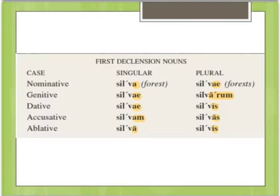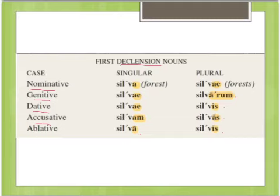Latin nouns are grouped in things called declensions. Declensions are groups of nouns that decline with a similar pattern. The first declension has the endings: a, ae, ae, am, a, ae, arum, is, os, is. This is something you'll have to learn and memorize, but most first declension nouns will follow this same pattern. The ending will tell you whether its case is nominative, genitive, dative, accusative, or ablative, and whether it's singular or plural.